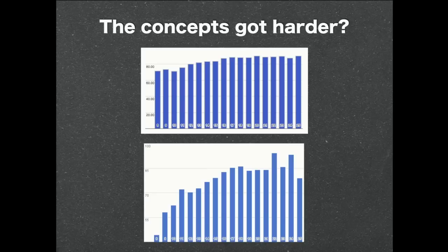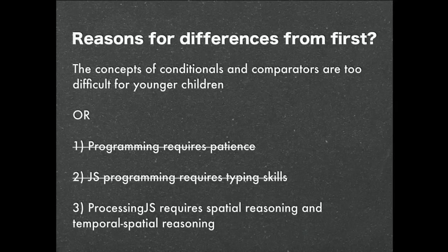But you do see there's a way bigger disparity across the ages here. Nine-year-olds are at around 57%, and 13-year-olds are at around 73%. The concepts definitely seem to have gotten harder — the main difference is the concepts. Maybe conditionals and comparators are too difficult for younger children. But it could also be that the spatial reasoning has gotten harder, and also the temporal spatial reasoning — they have to understand how the animation loop works, that we call the draw function every frame.